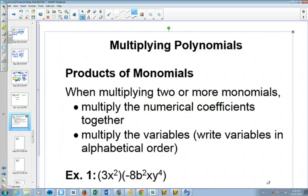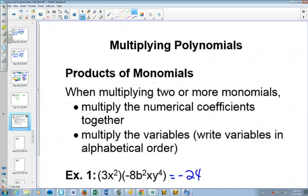So multiply the numbers together. Three times negative eight, you get negative 24. Then with your variables, putting your variables together: x squared means x times x, b squared is b times b, and then we have another x, and then we'd have y times y times y times y. And if all those are put together, how many b's would you have? Still two of them. It'll be b squared still.